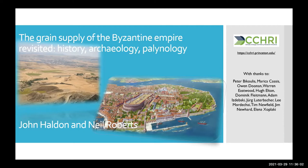Neil's going to talk about elements of the broader context and the history of agrarian production and landscape in the Byzantine period, focusing particularly on the pollen data, within the framework of the changing climate conditions to which the Eastern Roman world was subject across several centuries. I'll start by saying a little bit about how we can set about reconstructing land use and generating some framework for understanding what was produced and where.